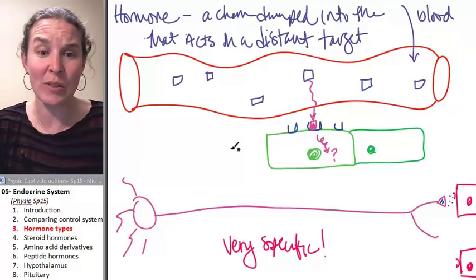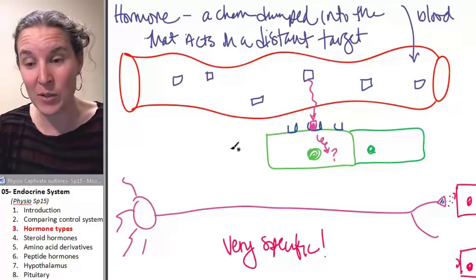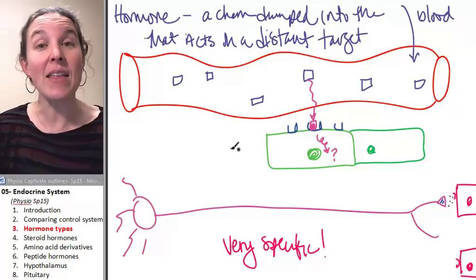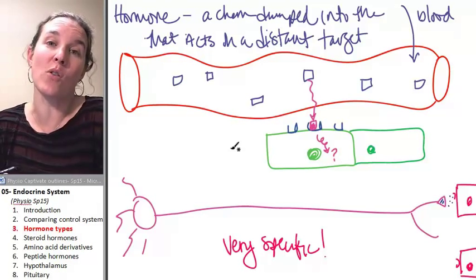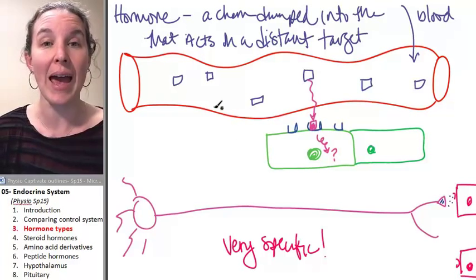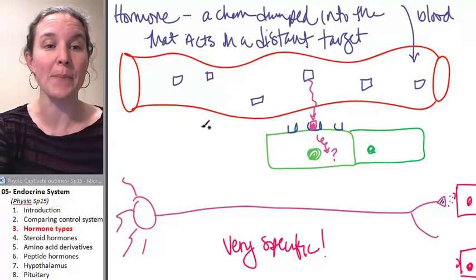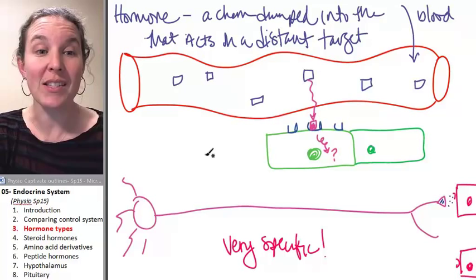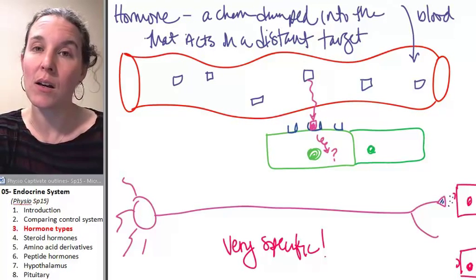And so we can basically learn the general categories. This kind of hormone acts like this. This kind of hormone acts like this. And then once we know, oh well, progesterone is this kind of hormone, then we kind of know the action that that hormone is going to take. We're going to start out with steroid hormones.